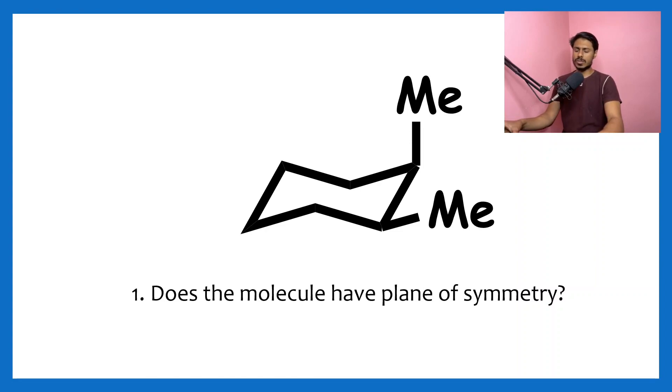The second question is whether the molecule has any point of inversion. Here also, the molecule clearly does not have any point of inversion. So these two symmetry elements which can destroy chirality are absent in the molecule, so the molecule would be chiral.